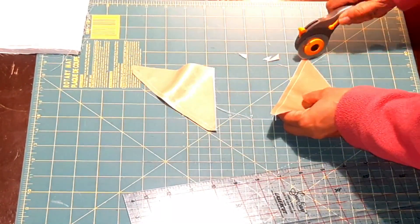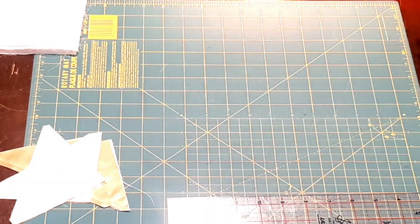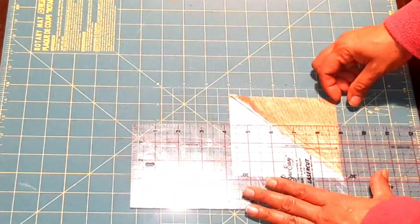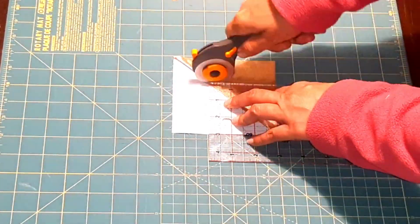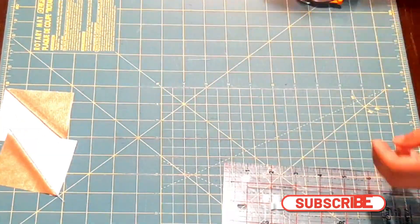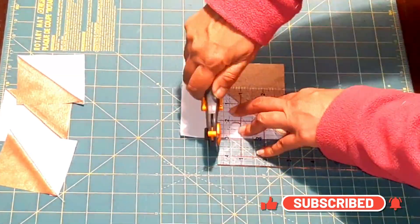I cut off the dog ears and then pressed the blocks open. I need to end up with a 5 inch block, so I trimmed my half square triangles down to three inches to give myself a little extra room, and then I'm gonna size the block once I'm done. I cut three inch squares of these cute little half square triangles and then I placed my pieces and sewed them together.